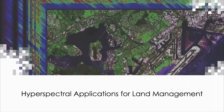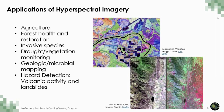Let's review some land-based applications of hyperspectral data. In the first session we briefly mentioned various applications and discussed specific sensors of interest. Today we will provide examples on how those data are used for agriculture, forest health and restoration, invasive species, drought and vegetation monitoring, geologic and microbial mapping, and hazard detection such as volcanic activity and landslides. In the image on the top you can visualize various sugarcane varieties, and in the image on the bottom you can see the San Andreas Fault along a ridge line.